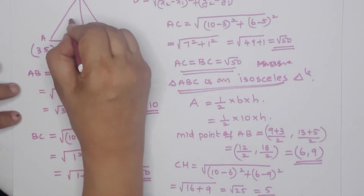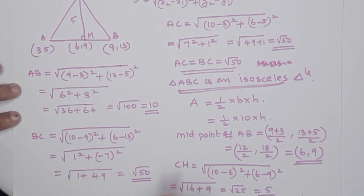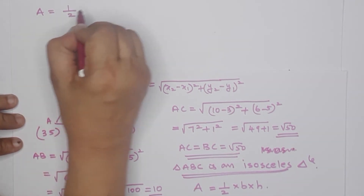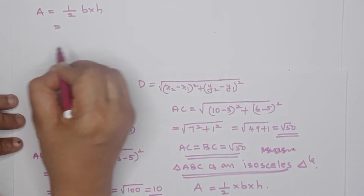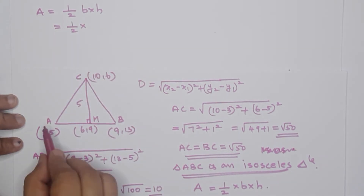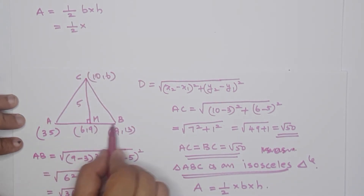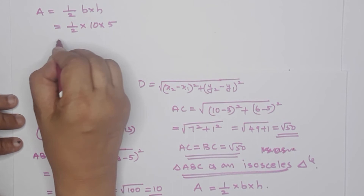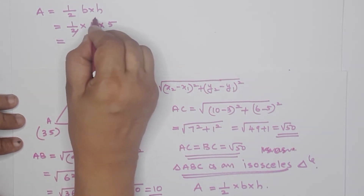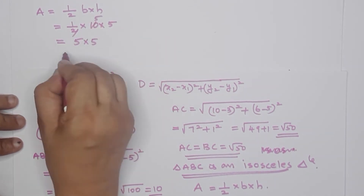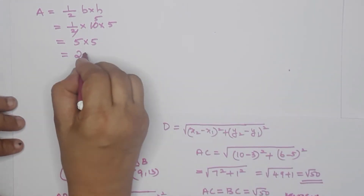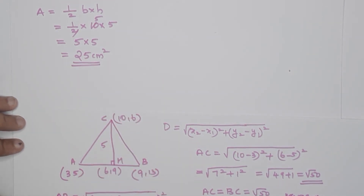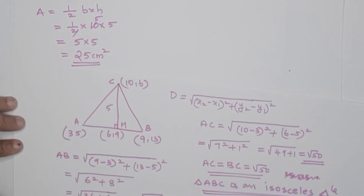The height CM equals 5. Area equals half base into height = half into 10 into 5 = 5 into 5 = 25. The area of the triangle is 25 square cm.